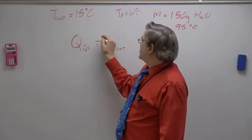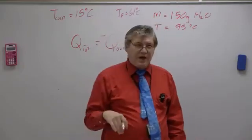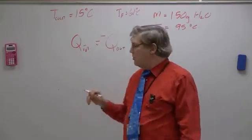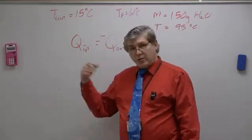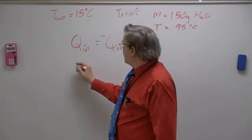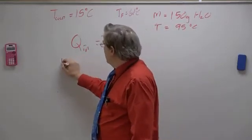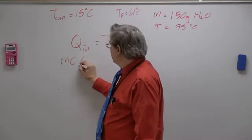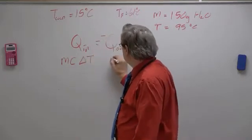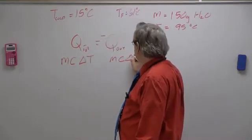And they have to equal each other. And we can toss a negative sign in there to show that one's going in and one's coming out. And we're going to solve these two problems because each one of these have mc delta t and mc delta t.